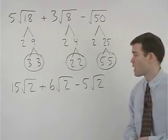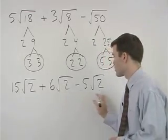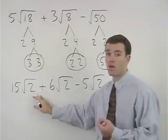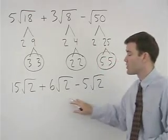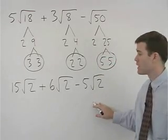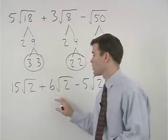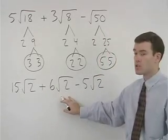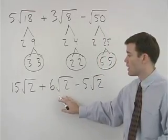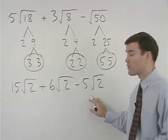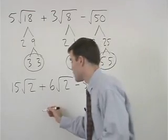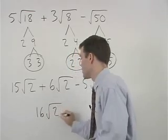Notice now that our radicands, or numbers inside the radicals, are all the same. So we can add these terms together. 15 root 2 plus 6 root 2 is 21 root 2, and 21 root 2 minus 5 root 2 is 16 root 2.